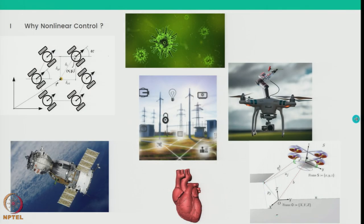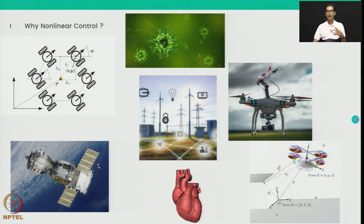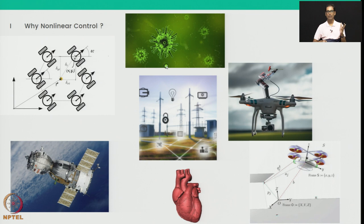The answer is rather obvious — almost every system we see around us is a nonlinear system. For example, here you see a non-holonomic mobile robotic system, like a network of mobile robots. Here you see a satellite in orbit. Here you see a smart grid network, virus or infection spread models, aerial manipulators, quadrotors, and even biological systems such as the beating of the heart.